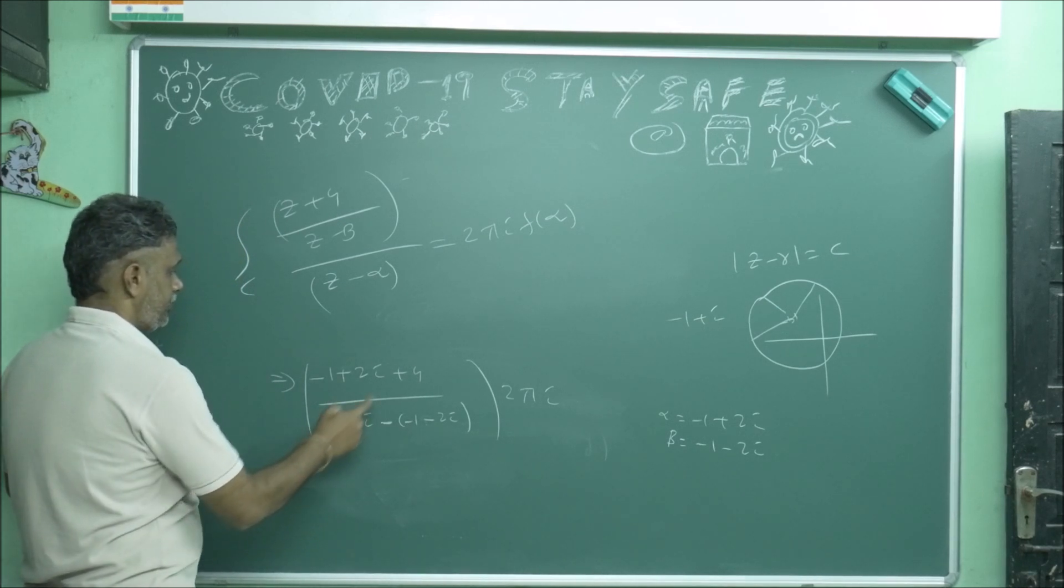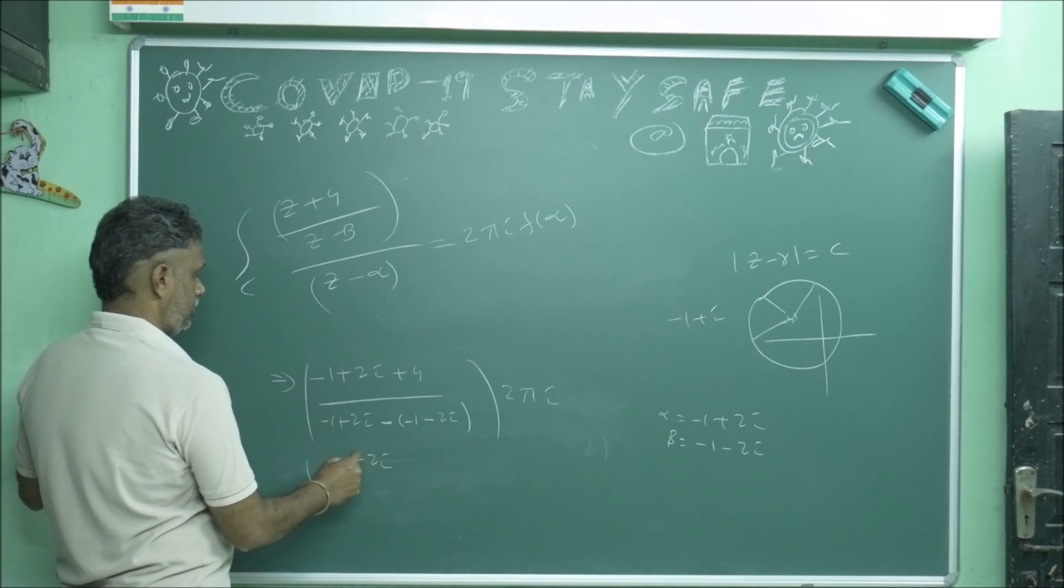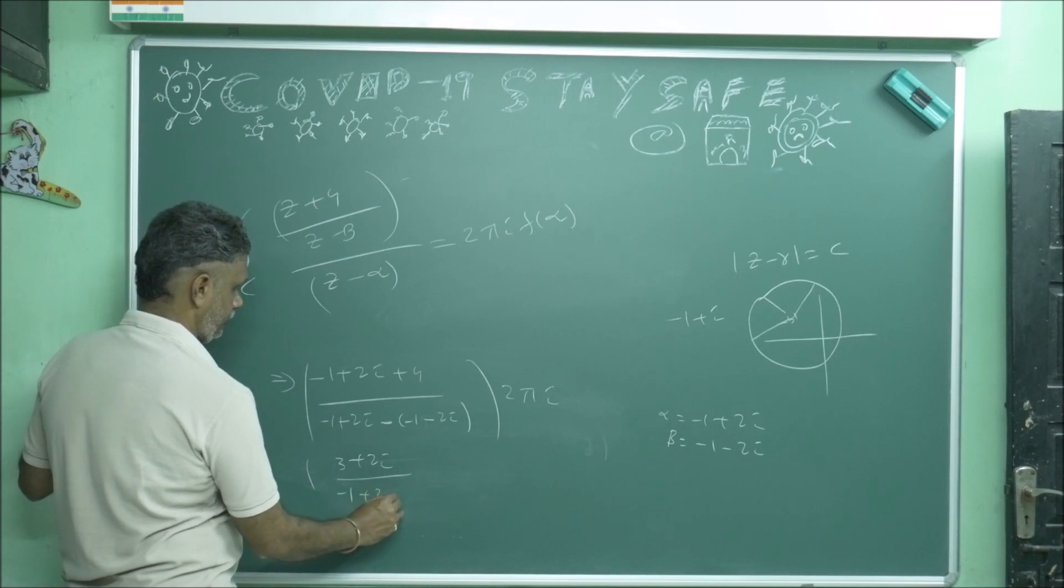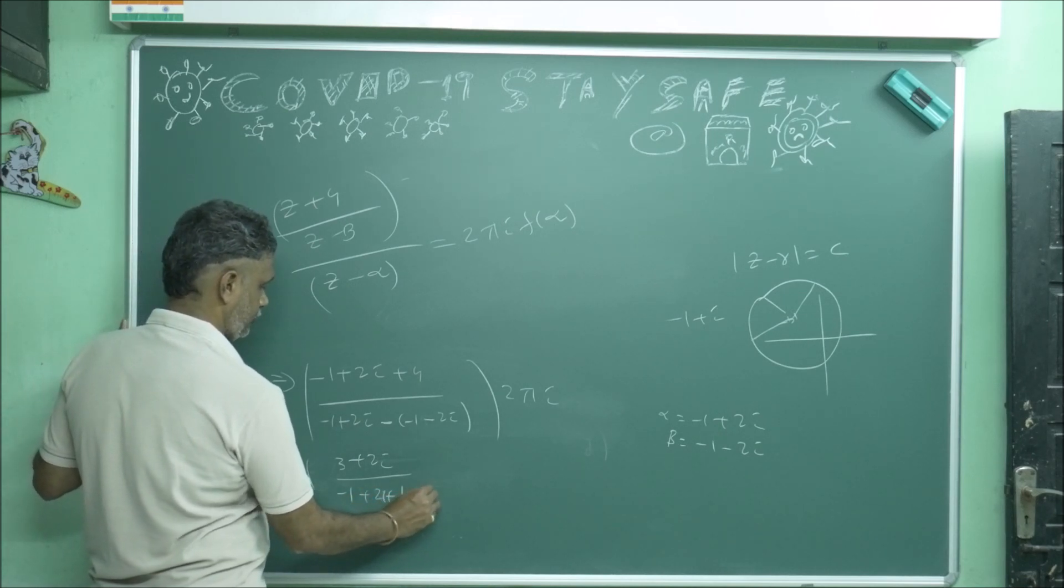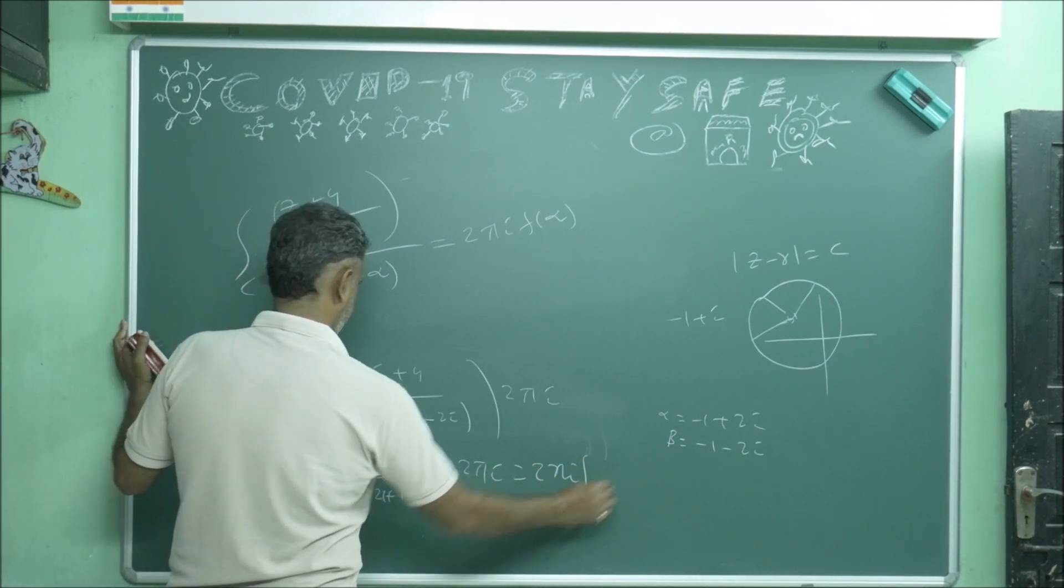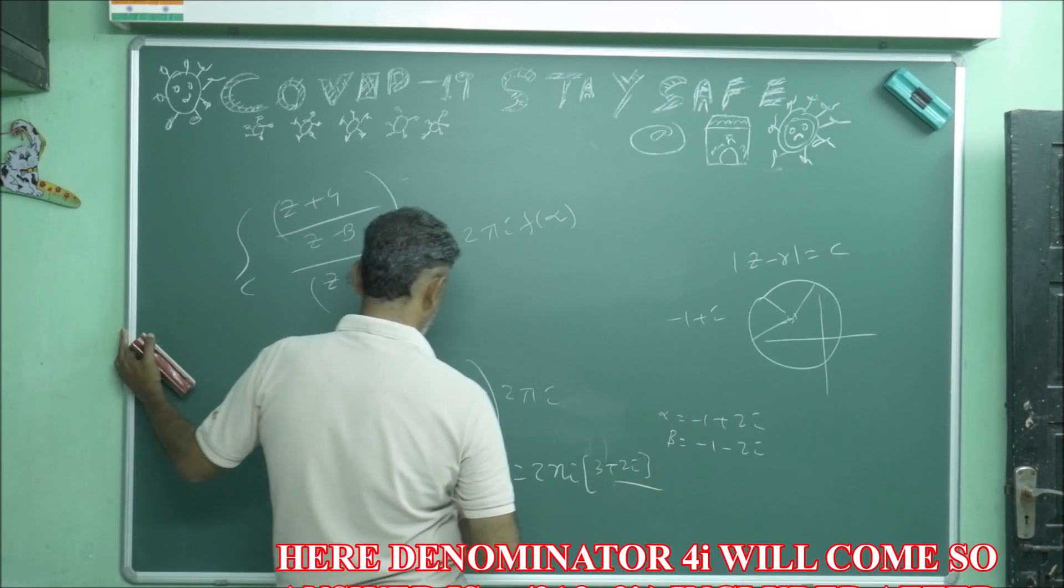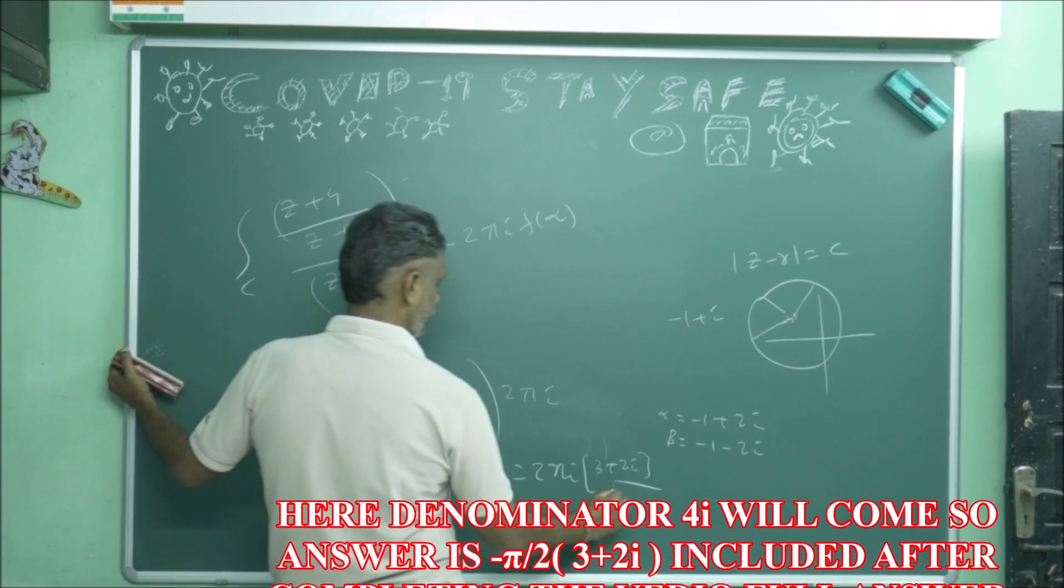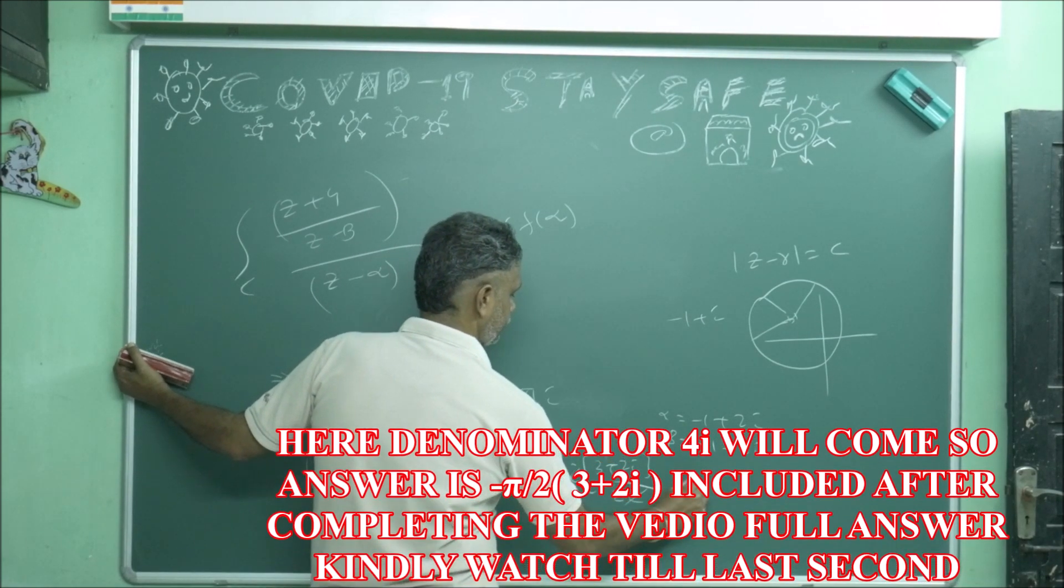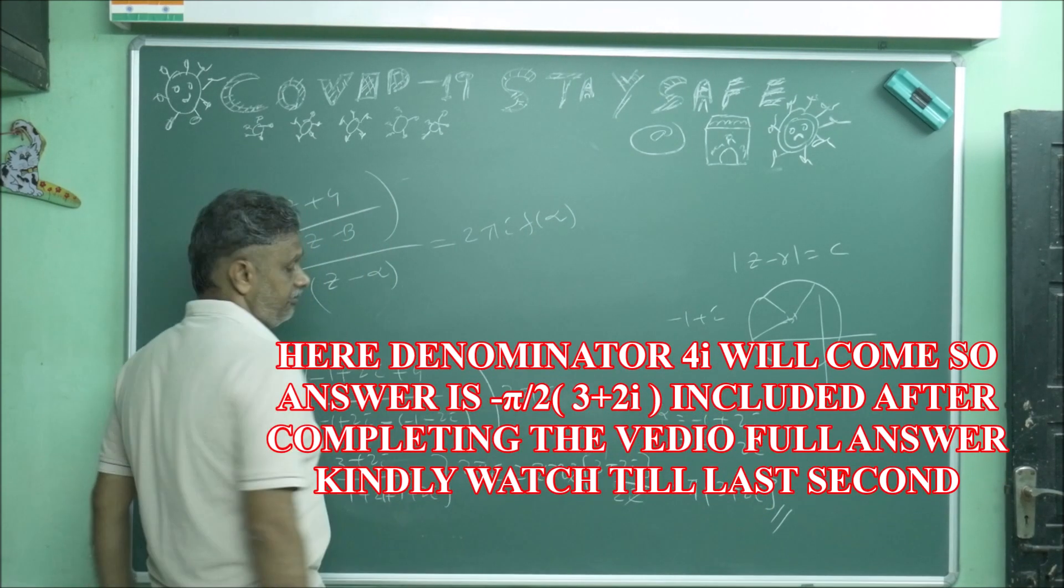So this becomes (-1 + 4) which is 3 + 2i. This becomes (-1 + 2i + 1 + 2i) equals 4i. So 3 + 2i divided by 4i. 2i and 2i cancel. This 2i, this 2i cancel. Answer is 2πi times (3 + 2i)/4i, which simplifies to 3πi + (3/2)π. So this is the way of the answer.